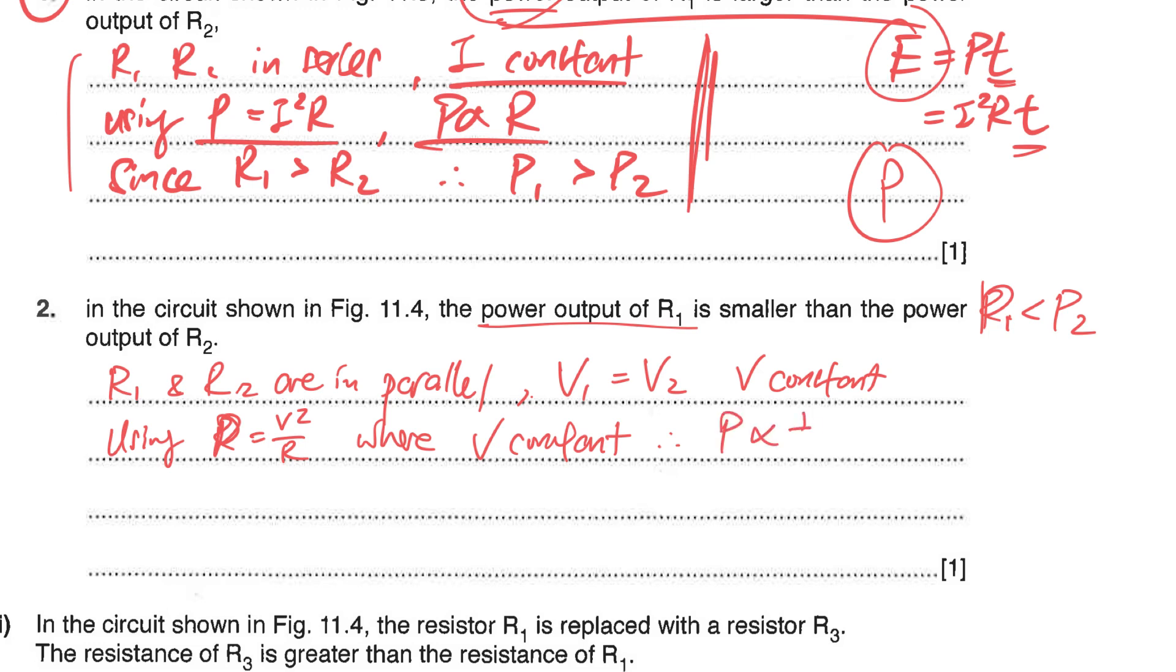Therefore your power is inversely proportional to R. So you write that out in full: power is inversely proportional to R. Once you state that, then likewise make use of what's given in the question. Since R1 is greater than R2, therefore the power of one will be less than the power of two. Since it's an inverse proportion, that means when one increases the other one will decrease.